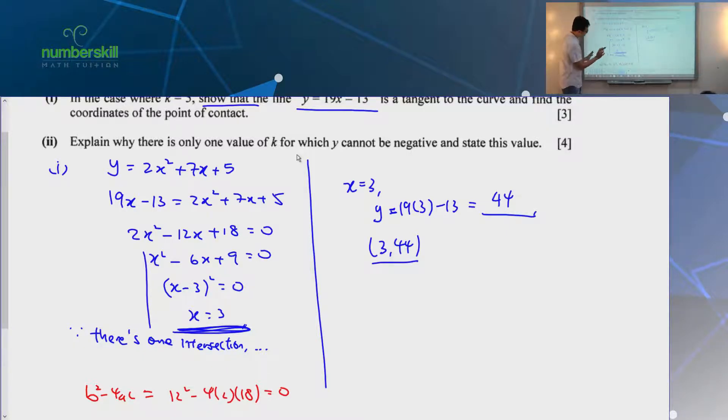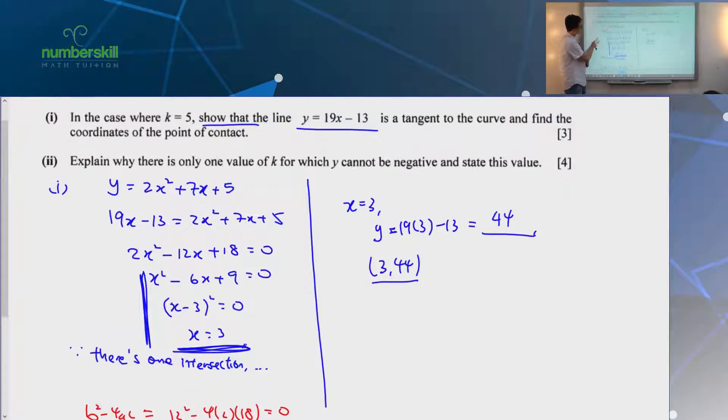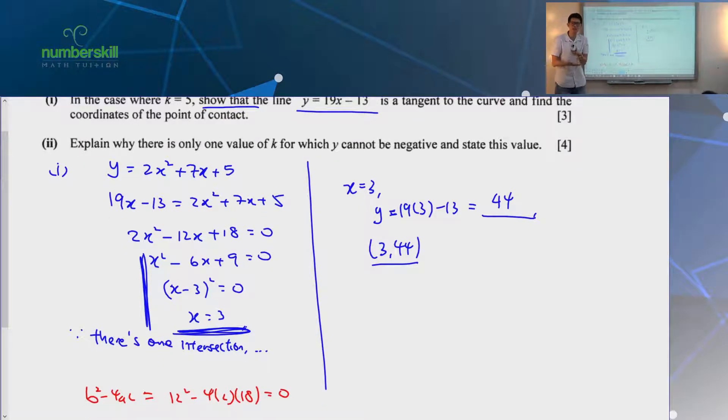And you have to explain. Because you must understand that this working, where x equals 3, it doesn't show that it's a tangent. You follow? What you are doing here is you are just trying to find the intersection point. But you have to write down. I mean, it's common sense. I know you know it's common sense. But you have to write down that, oh, because there's only one intersection point, therefore, it must be the tangent. Done. Just this one line. Understand?